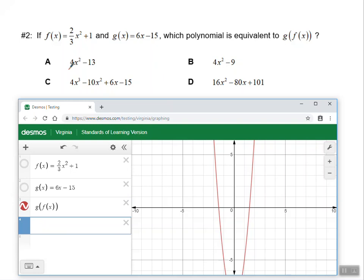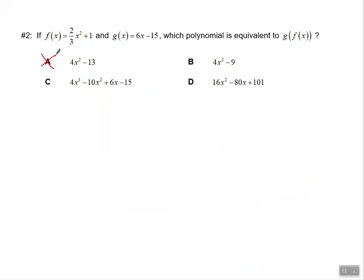Now what I need to do is figure out which of these answer choices would produce the same exact graph. So I'm going to choose answer choice A first, and I'm going to type that in. It says 4x squared minus 13. So, ooh, that's close, but that is not the same exact thing. So 4x squared minus 13 is not one of my answer choices.